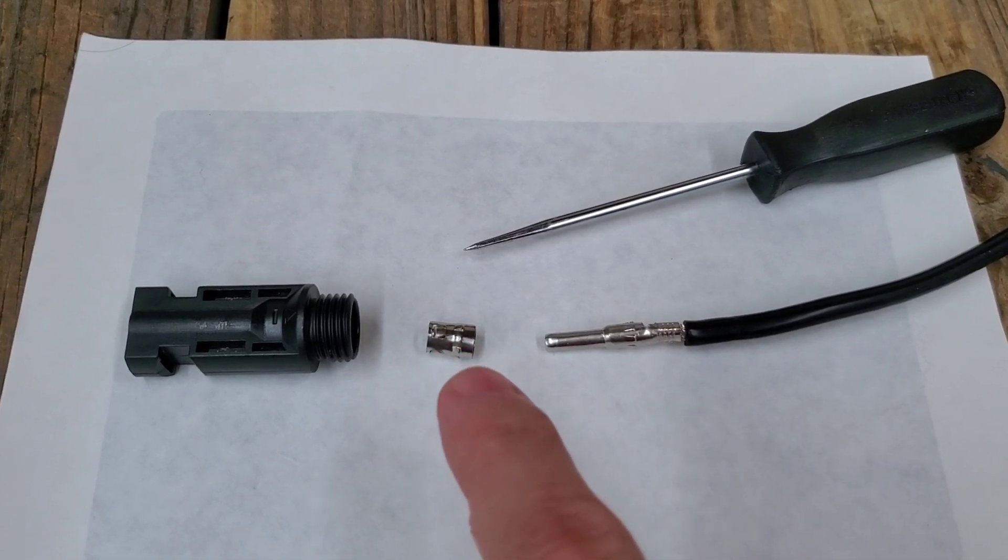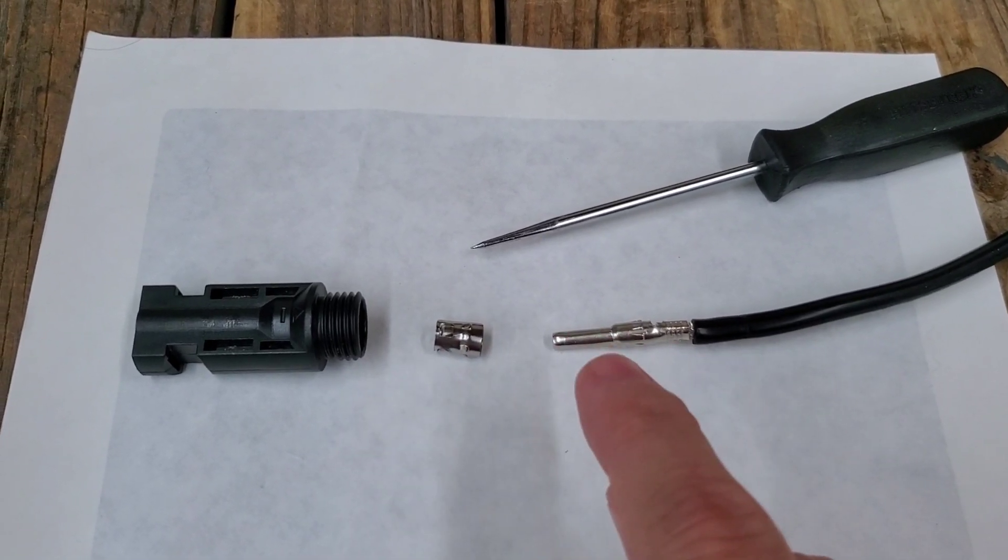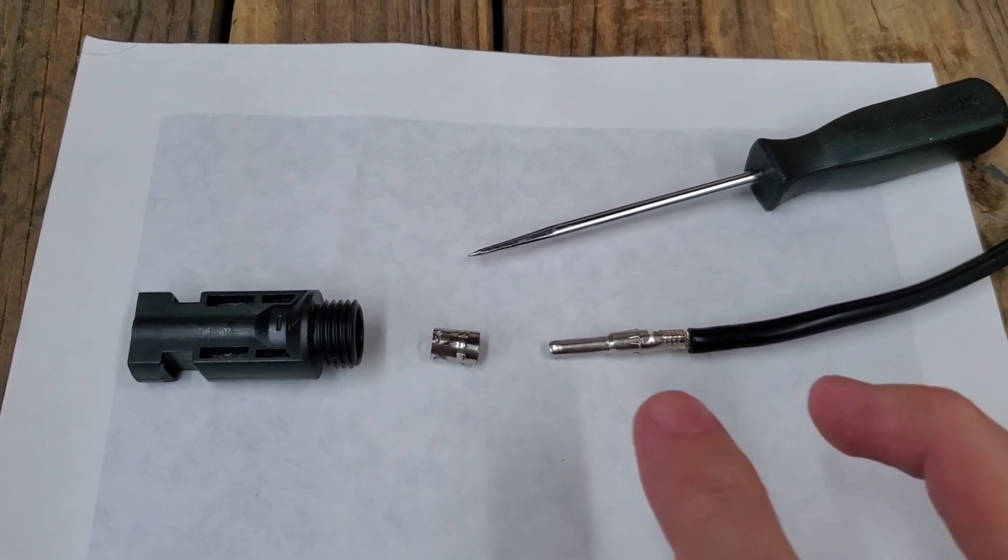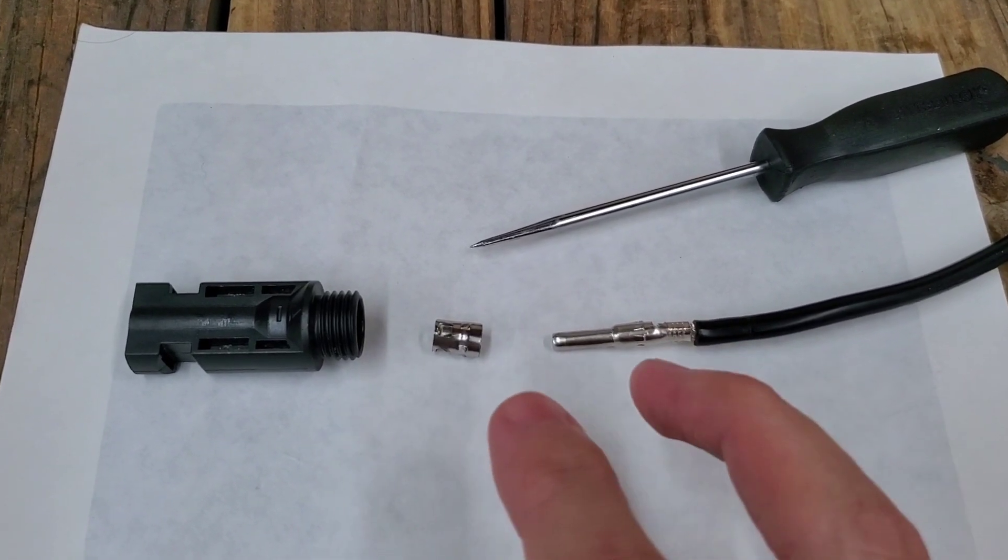So the trick that I figured out is to remove the sleeve and the pin from the housing altogether. Then you can remove the sleeve from the pin.